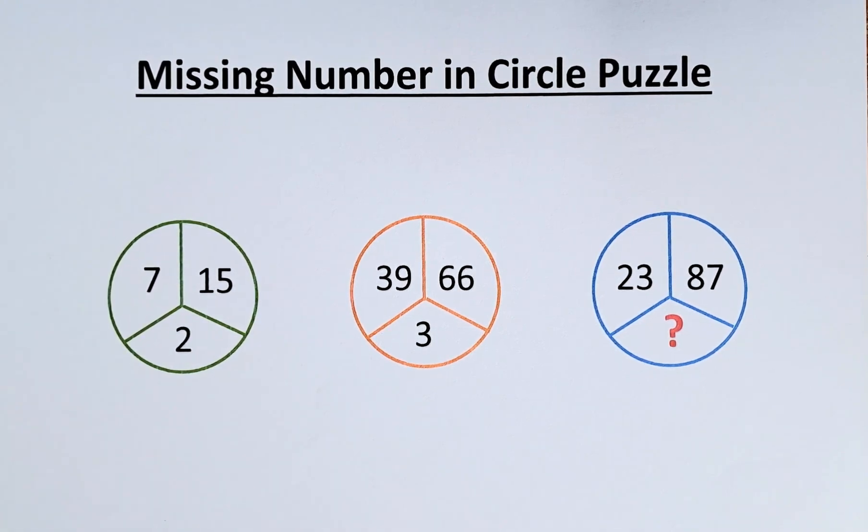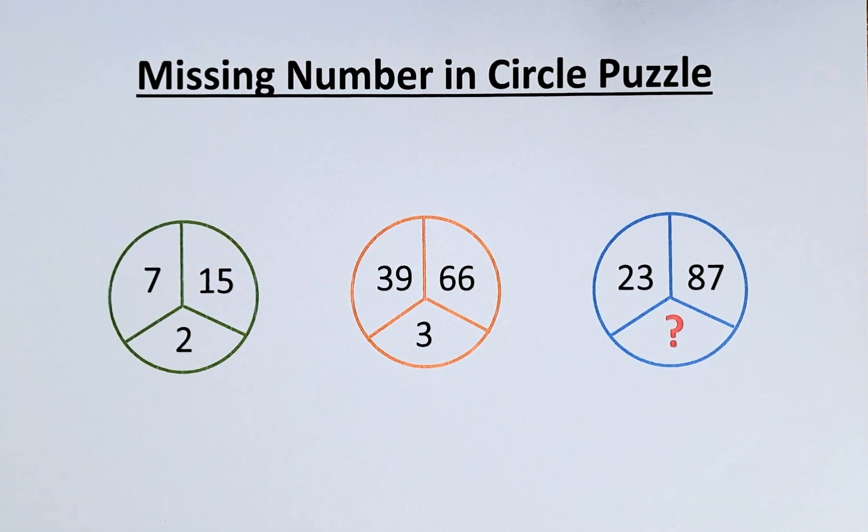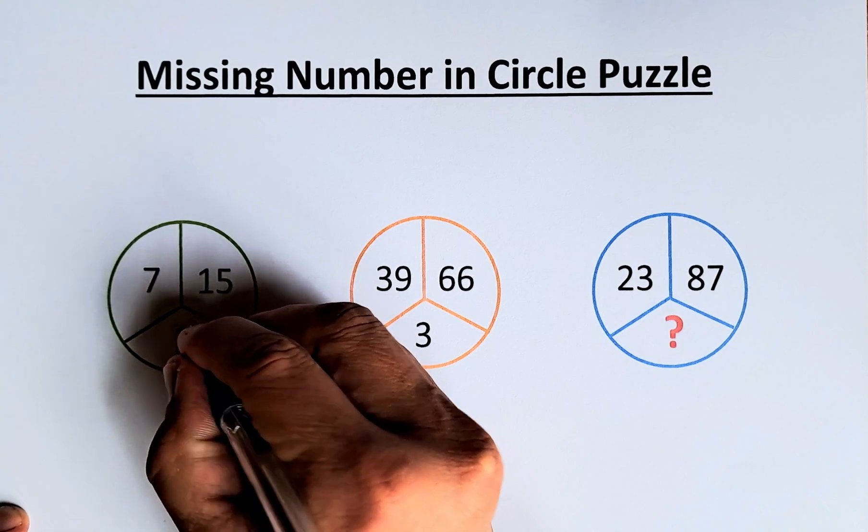We have to work it out so that 7, 15 equals 2, 39, 66 equals 3, and 23 and 87 equals the question mark. So to do that, we take 15 minus 7, that will give us 8. 8 is the same as 2 to the power of 3, 2 cubed.